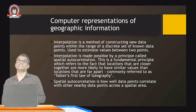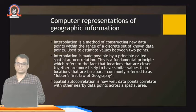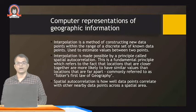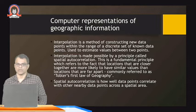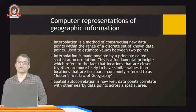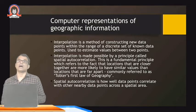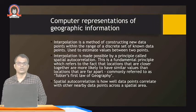Spatial autocorrelation is a fundamental principle which refers to the fact that locations closer together are more likely to have similar values than locations that are far apart. If two points are close, the in-between points are closer together in value; if the points are far apart, they are less likely to have similar values. This is commonly referred to as Tobler's First Law of Geography.